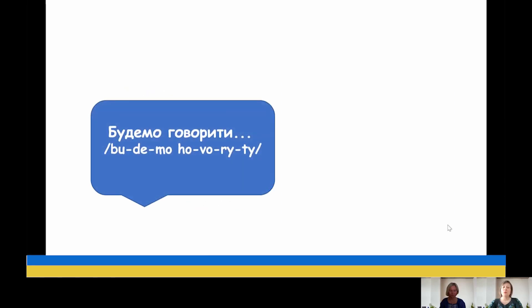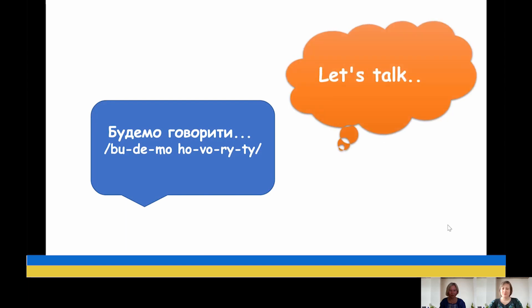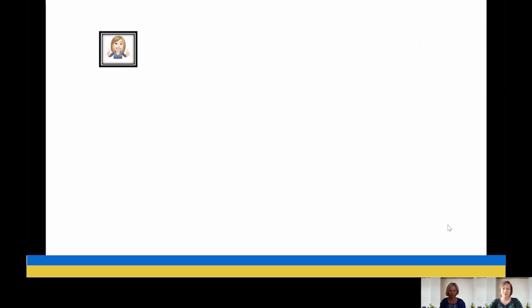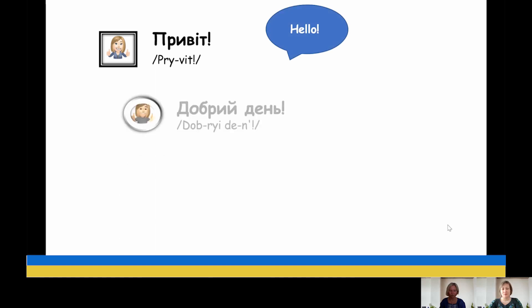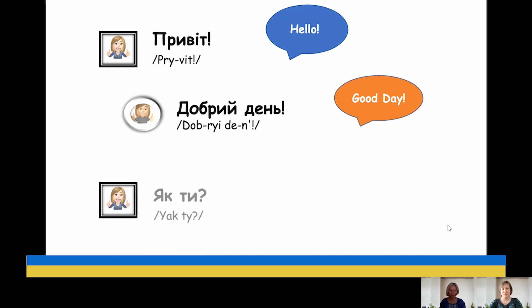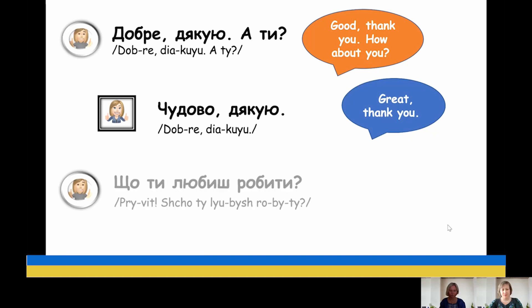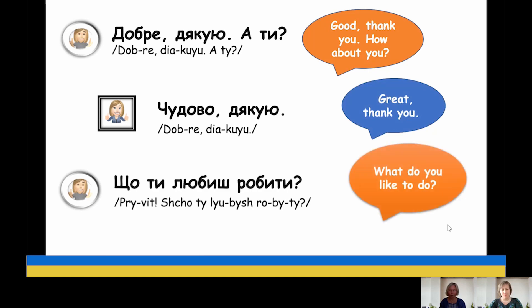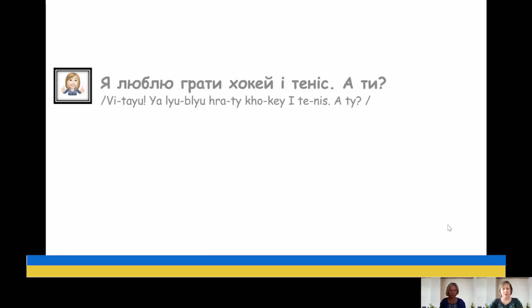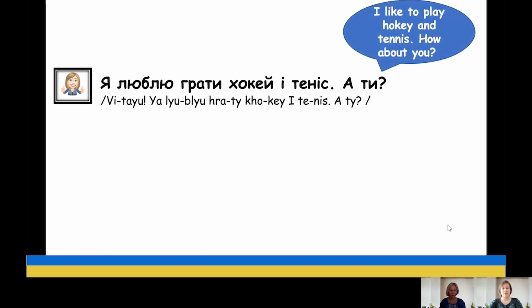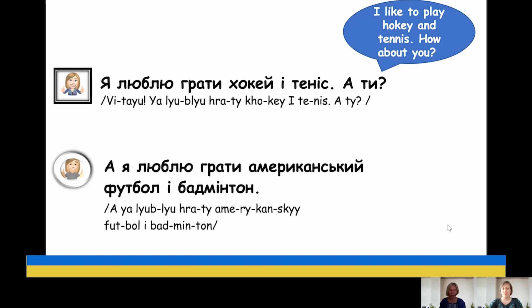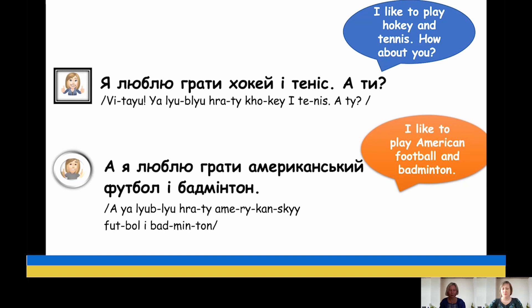Знаменіто. Будемо говорити. Let's talk. Привіт. Добрий день. Як ти? Добре, дякую. А ти? Чудово, дякую. Що ти любиш робити? Я люблю грати хокей і теніс. А ти? А я люблю грати американський футбол і бадмінтон.